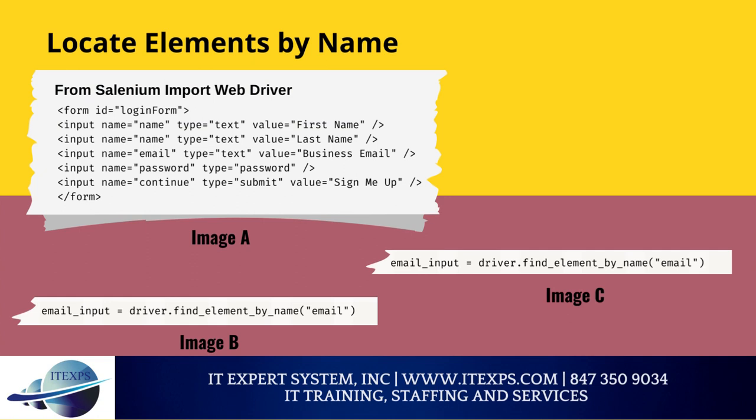Locating elements by name: In HTML5, form elements often have a name attribute. The find element by name method returns only the first element with the matching name. If multiple elements of the same name exist, the first matched element is returned. No matching elements result in a NoSuchElementException. For example, using find element by name returns the email form element. However, it only returns the first name form element, making it impossible to reach the last name input field using this method alone. This brings us to the next locator.